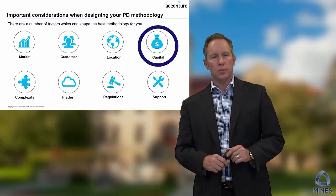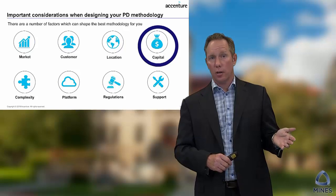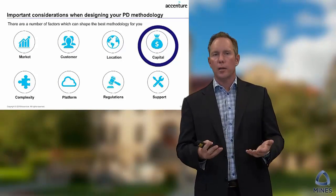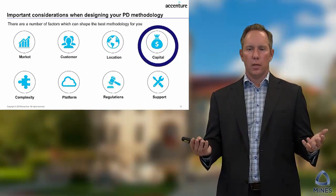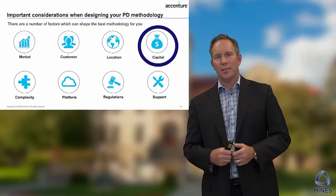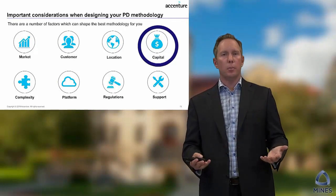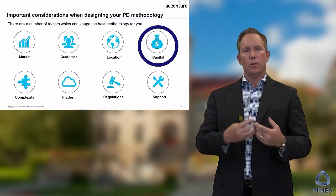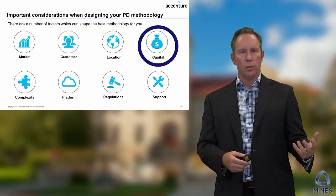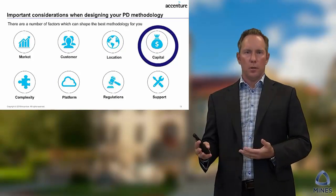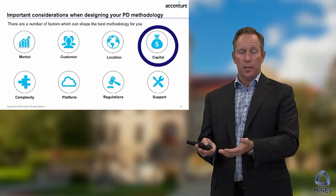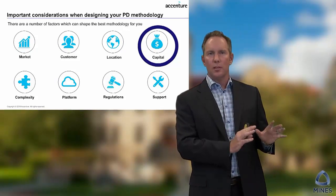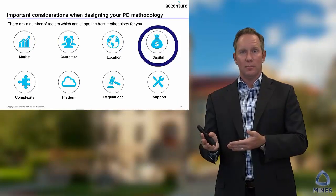Capital is a fourth consideration and it's critical. Some products are very capital light, like software — you can design it, update it, change it without a huge capital expense, and you can scale it easily. Other products are extremely capital intensive — a car, a train, a plane. Once you start designing and investing in tooling, materials, and inventory, that all takes money. When you have a mistake in a capital-intensive product, there's a lot of capital expended because you have to redesign the product, the tooling, and maybe scrap inventory. So your methodology might be more front-loaded to make sure you're not wasting money or introducing risk.